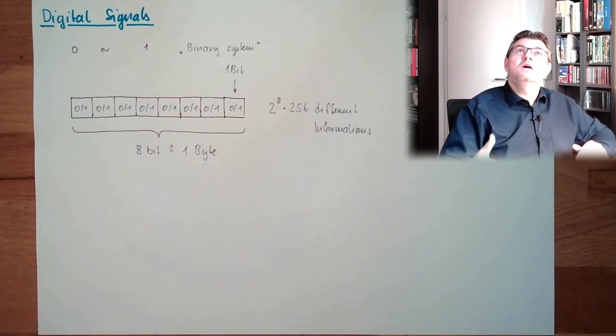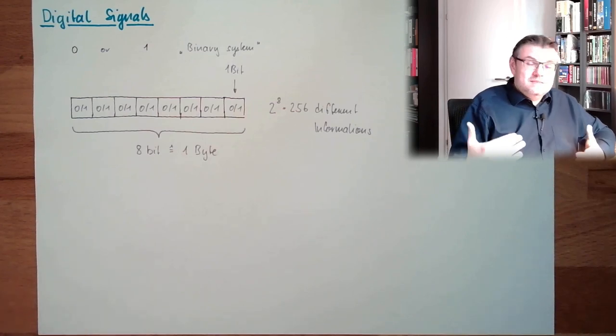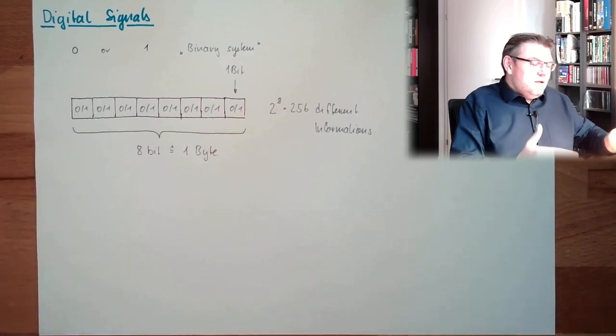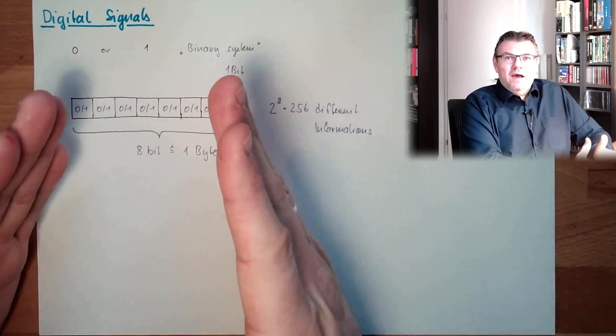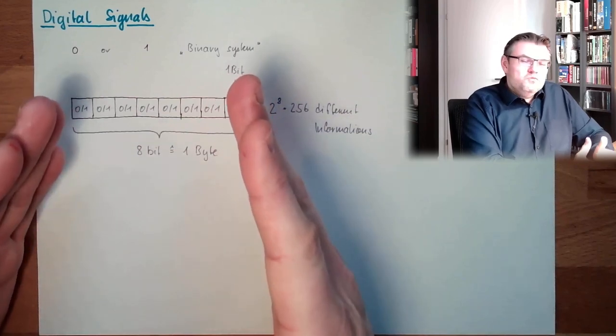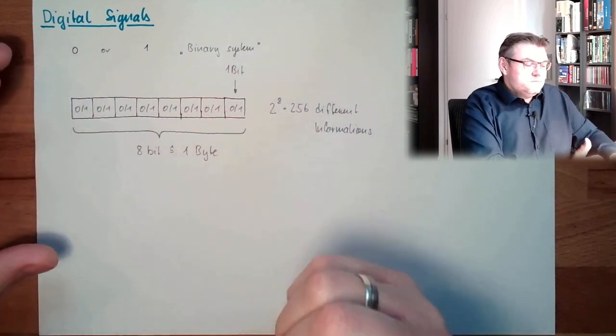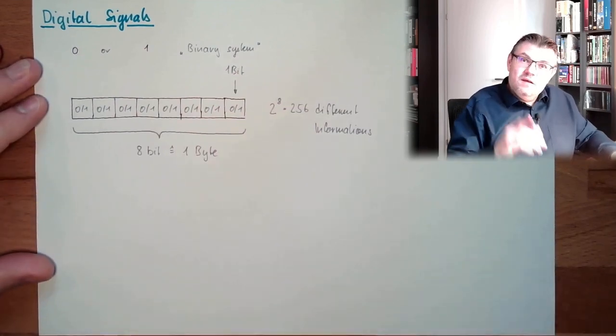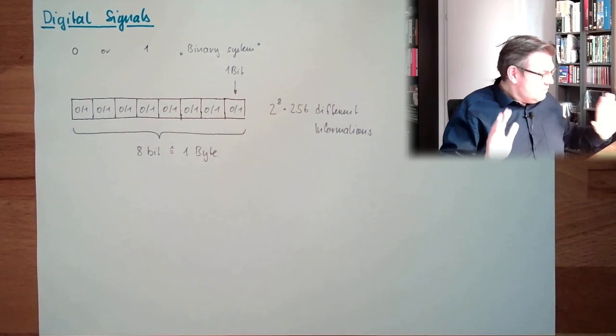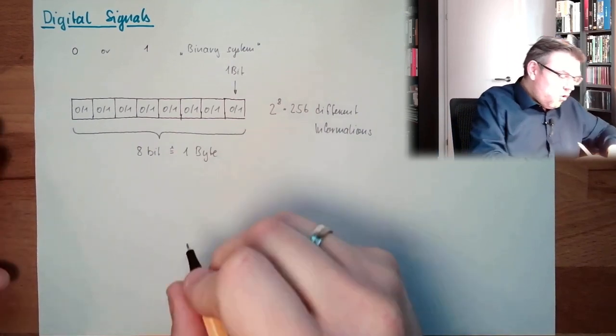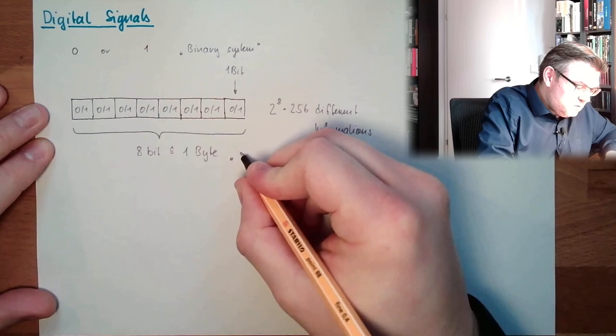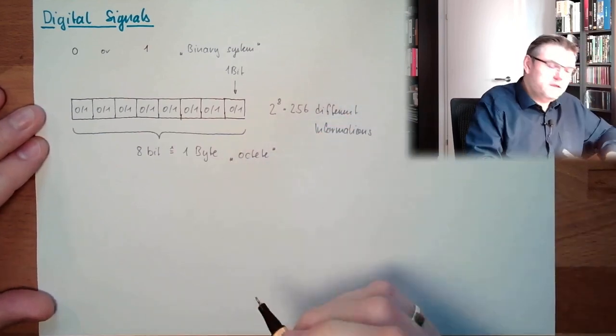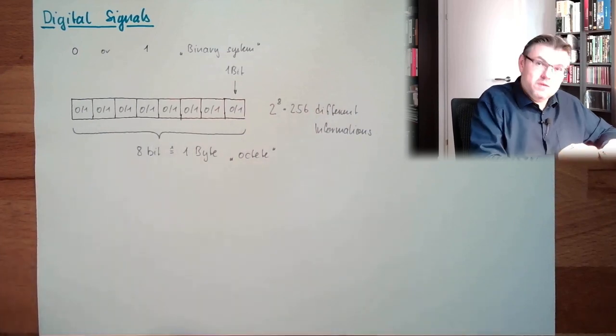And the byte was, or actually is, dependent on the used hardware. However, 8 bit architecture was very, very common, and so a byte got synonym for 8 bits. The synthetically correct name of a byte would be octet, because it consists of 8 bits.